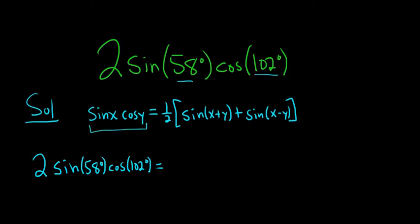So here, there's a 2 missing. So to make this match, we have to multiply this by 2 and multiply this by 2. So these would cancel, and then we're left with sine of x plus y.